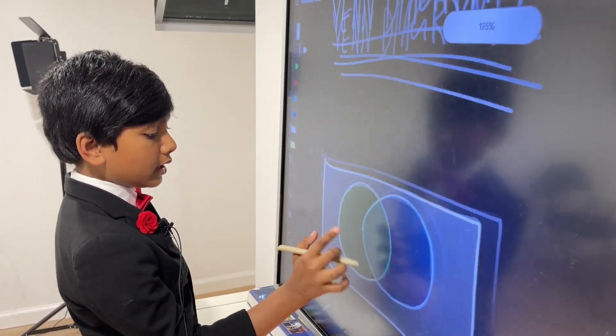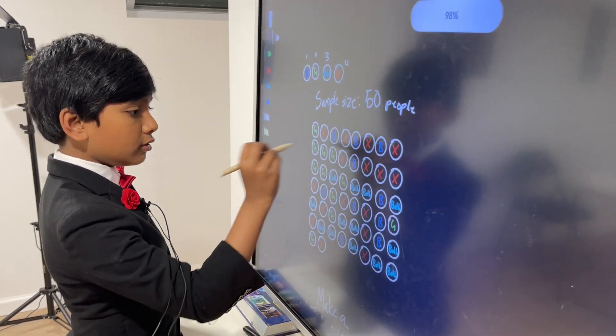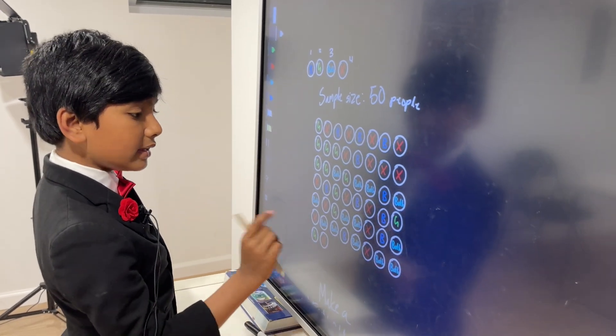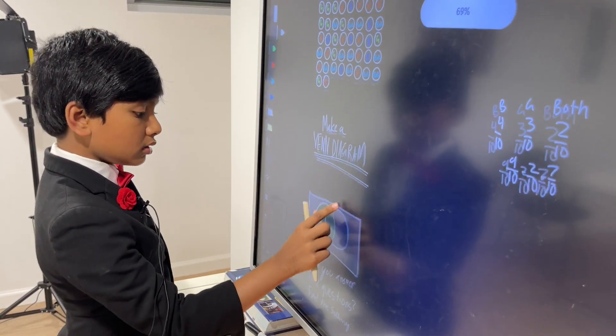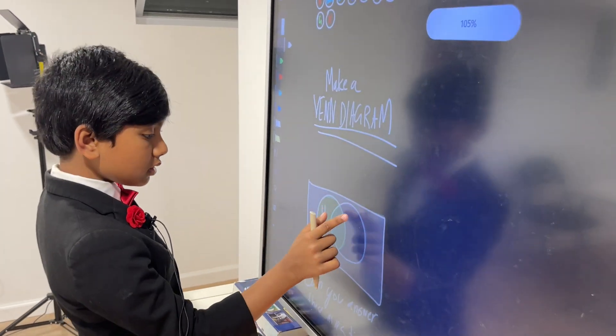So, first, we're going to count how many greens there are. So, how many are there? Well, there's one, two, three, four, five, six, seven, eight, nine, ten, eleven. So, there are 11 people who like green.